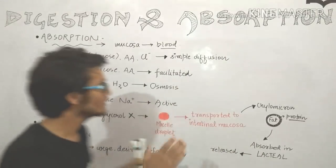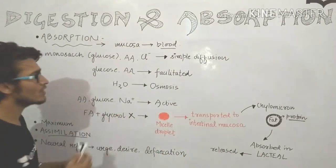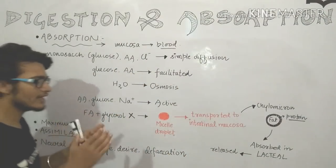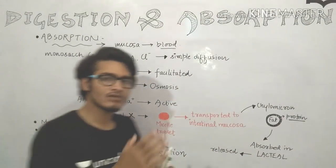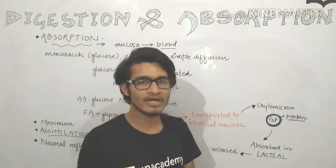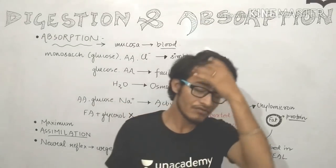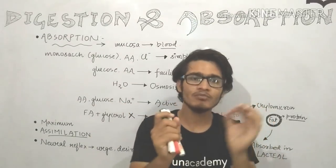So the sequence is: intake of food, then digestion, then absorption into the bloodstream, then assimilation — utilization of food by tissues or organs — and finally egestion, which is the removal of undigested or unabsorbed food materials.